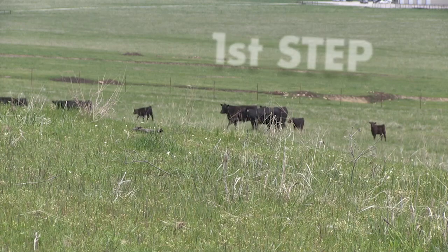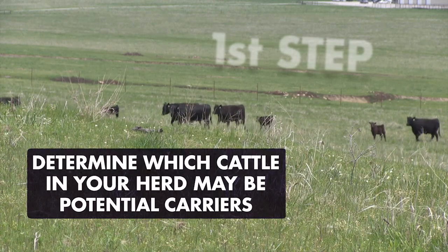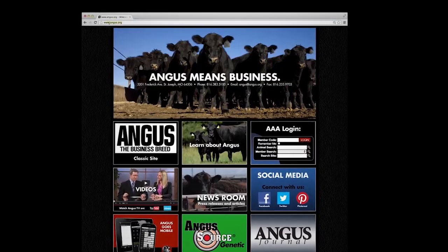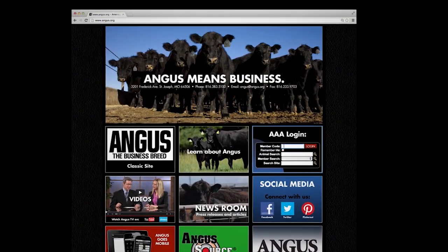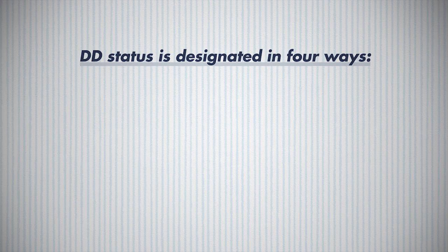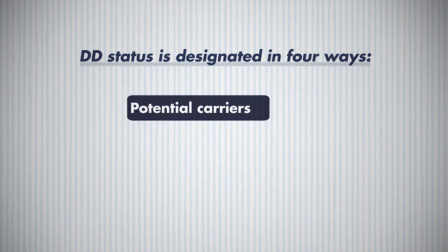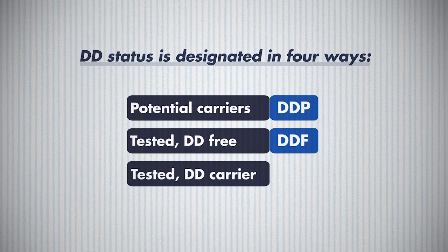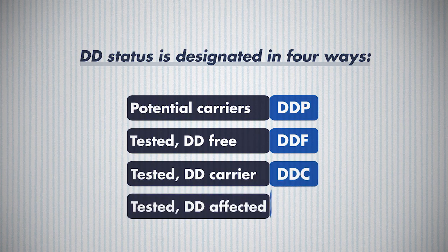The first step in managing genetic conditions is knowing which cattle in your cow herd may be potential carriers. You can visit angus.org to access the AAA login, where you can generate a list of potential DD carriers in your inventory. You'll also see that the DD status is designated in four ways: potential carriers are identified with a DDP, tested DD-free cattle with a DDF, carrier cattle with a DDC, and affected cattle with a DDA.